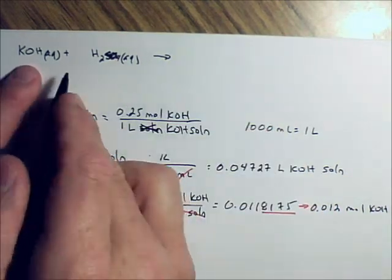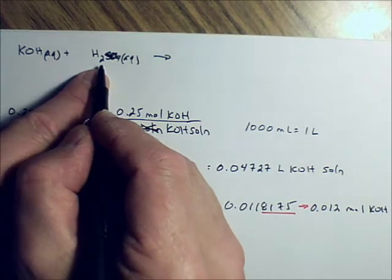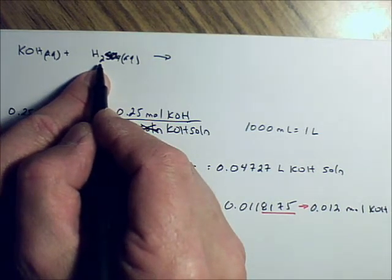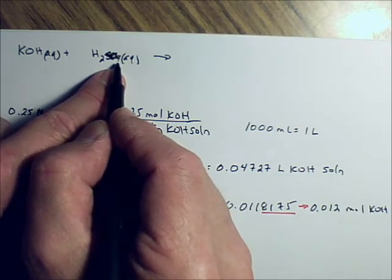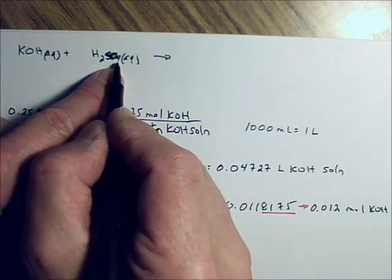So then the products we're going to make. Remember, subscripts like this 2 here do not travel. Subscripts like the 4 do travel because this 4 is part of a polyatomic ion.